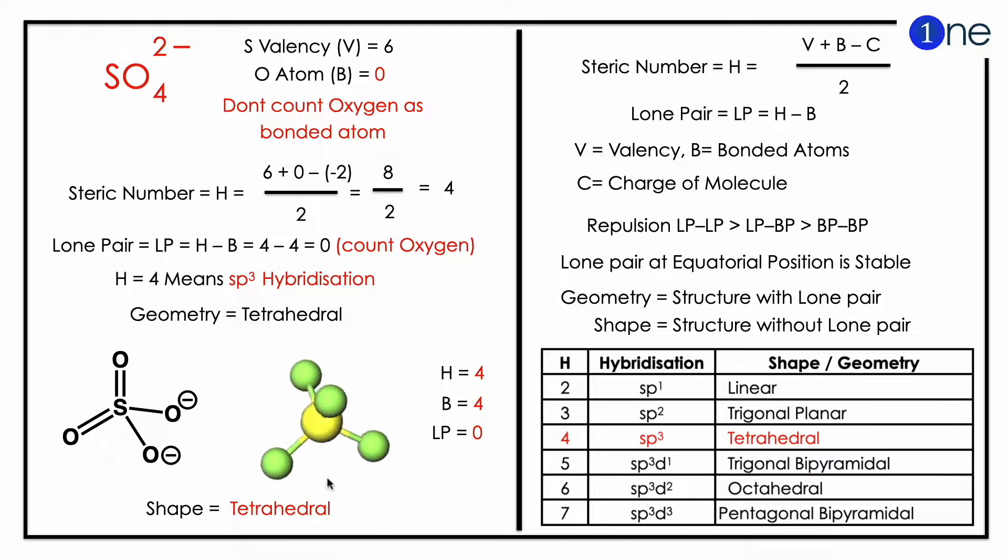The sulfur valence is 6. You should not count oxygen atom as B, so it is 0. If you substitute in the formula, H equals 6 plus 0 minus 2, divided by 2, which gives 8 by 2, which is 4.